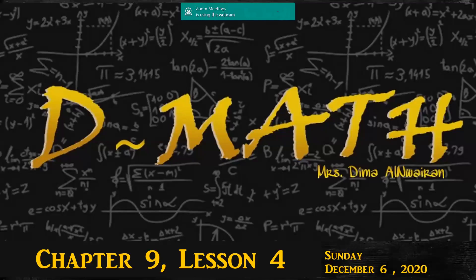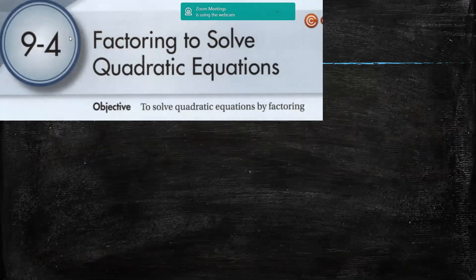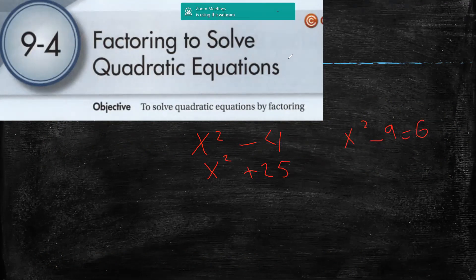Today we will start with lesson 4, which is talking about factoring to solve quadratic equations. As I told you in the previous lesson, we have two ways to solve quadratic equations. But if we have an x squared, or if b is not given, like if I have x squared minus 4, x squared plus 25, x squared minus 9 equals 6 — all of these equations have no b.